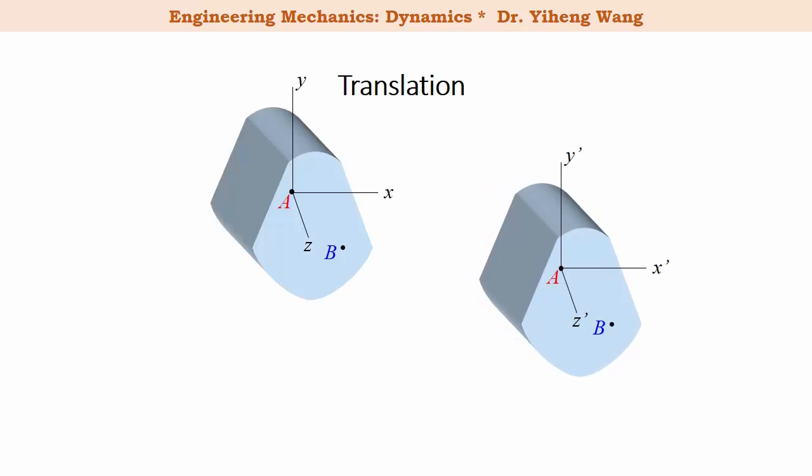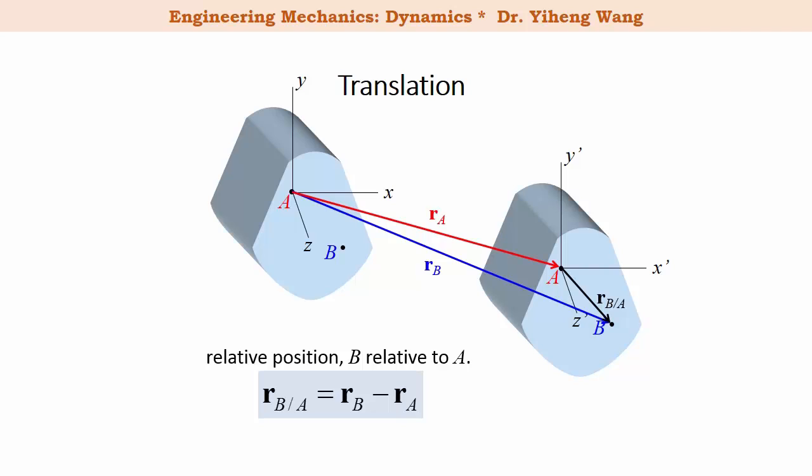Therefore, at any given time during motion, vector r_a represents the absolute position of point A measured from a fixed origin, r_b represents the absolute position of point B, and r_B/A represents the relative position of point B relative to point A. And we already learned that this relative position equals r_b minus r_a.